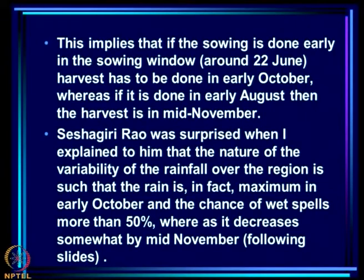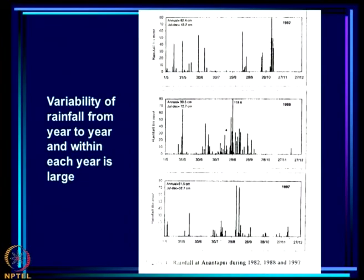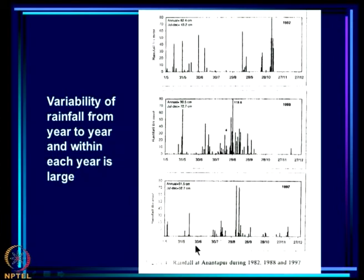Rain is in fact maximum in early October, with more than 50 percent chance of wet spells, and it decreases somewhat by mid-November. I will show what we can derive from about 90 years of daily rainfall data at Anandpur. The rainfall varies a great deal from year to year, and looking at daily rainfall within the rainy season for three years — 1997, 1988, and 1982 — you can see how different the patterns are: one year with reasonably well-distributed rainfall, another with most rain early and an early cessation, and a third with one genuine wet spell and several small ones throughout.